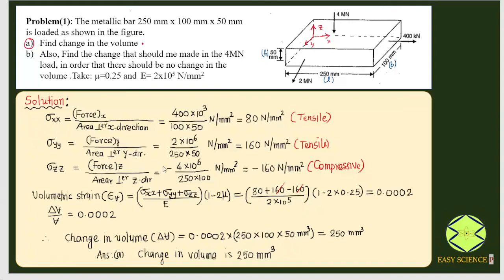The solution to the first part is done. Very simply: first, we find volumetric strain by getting the values of stresses in x, y, and z directions, then substituting the respective values.